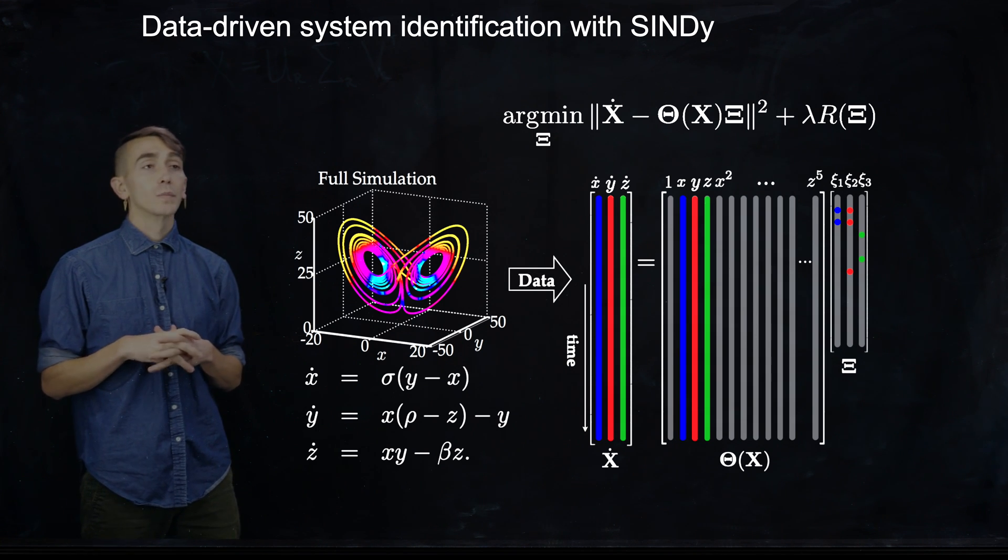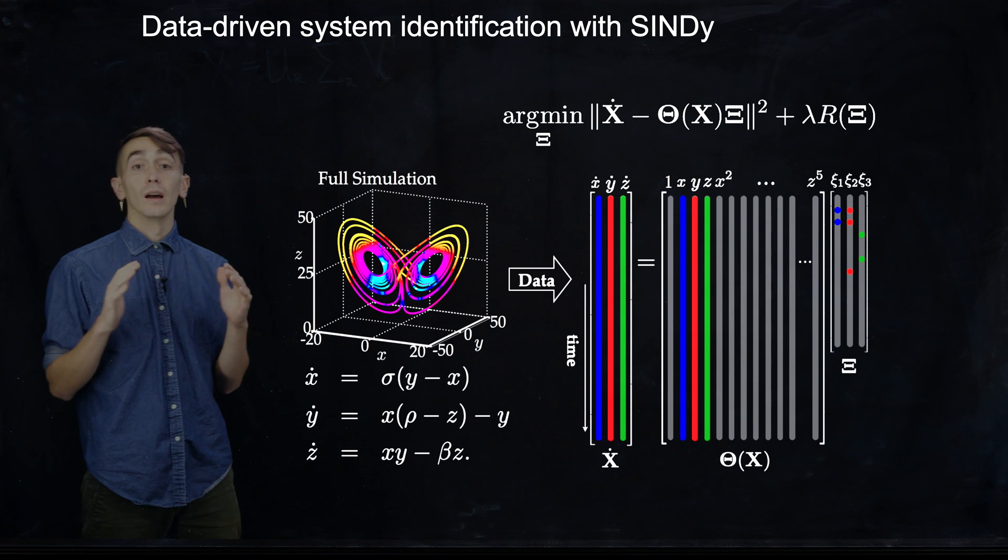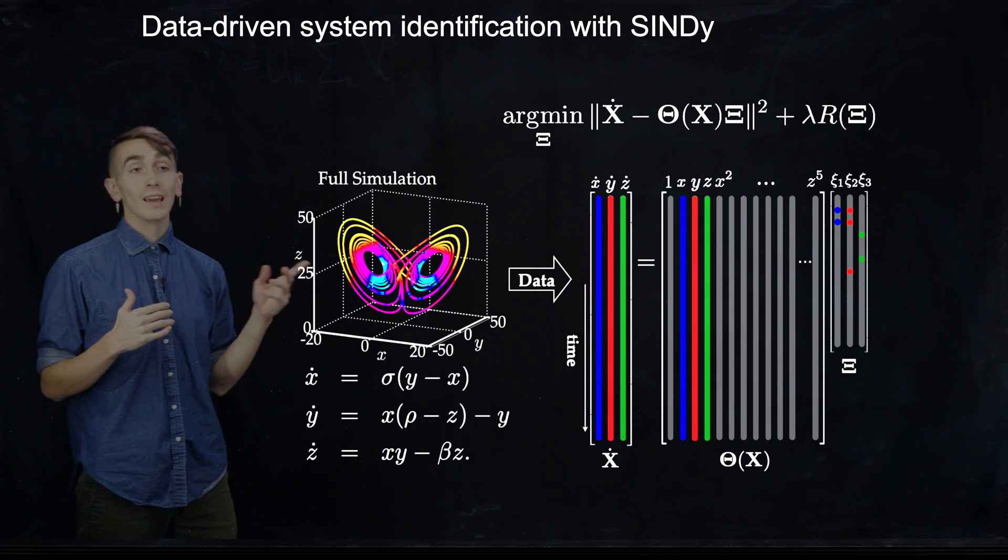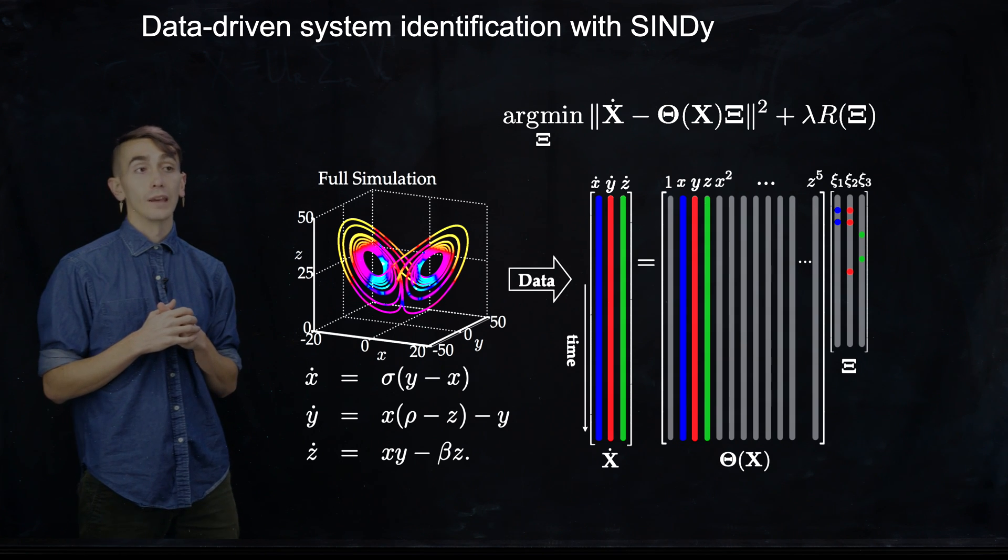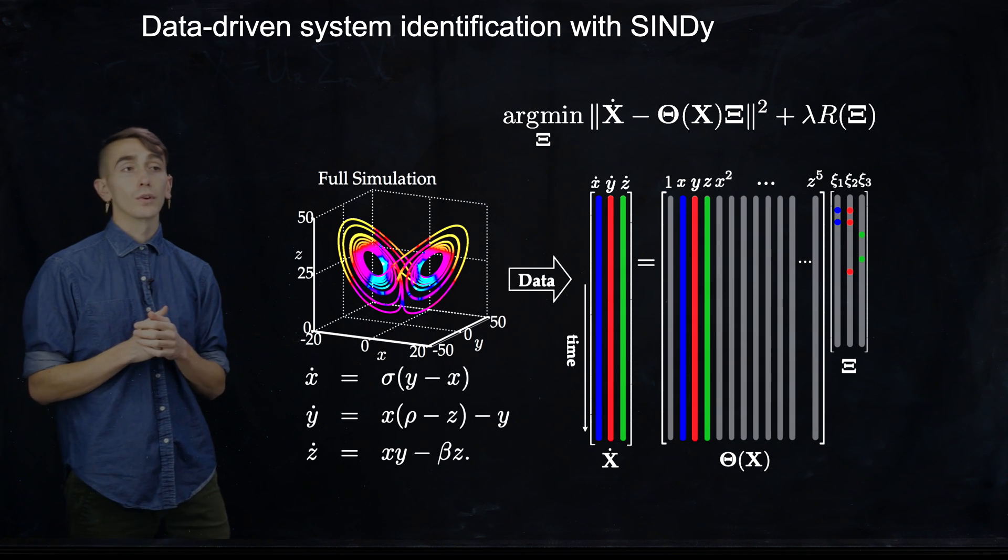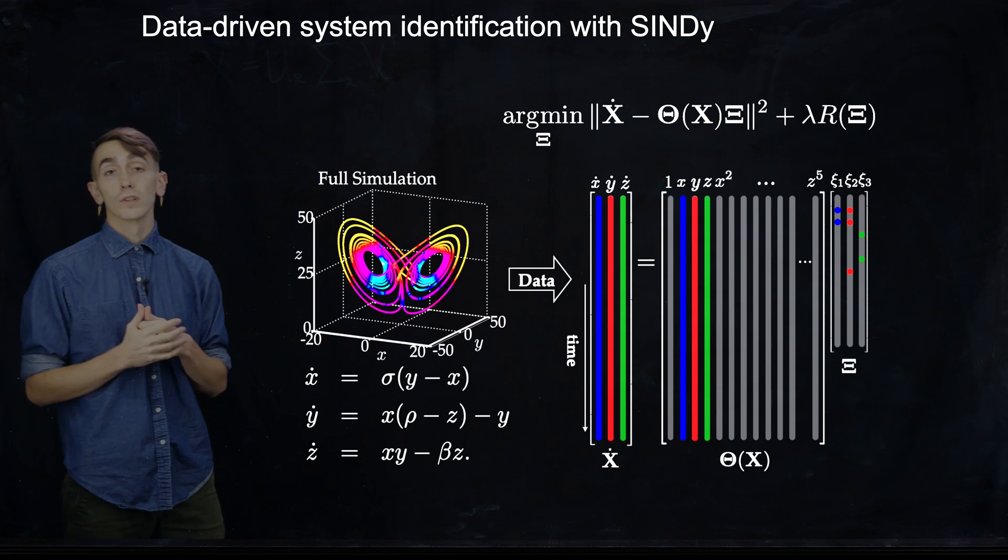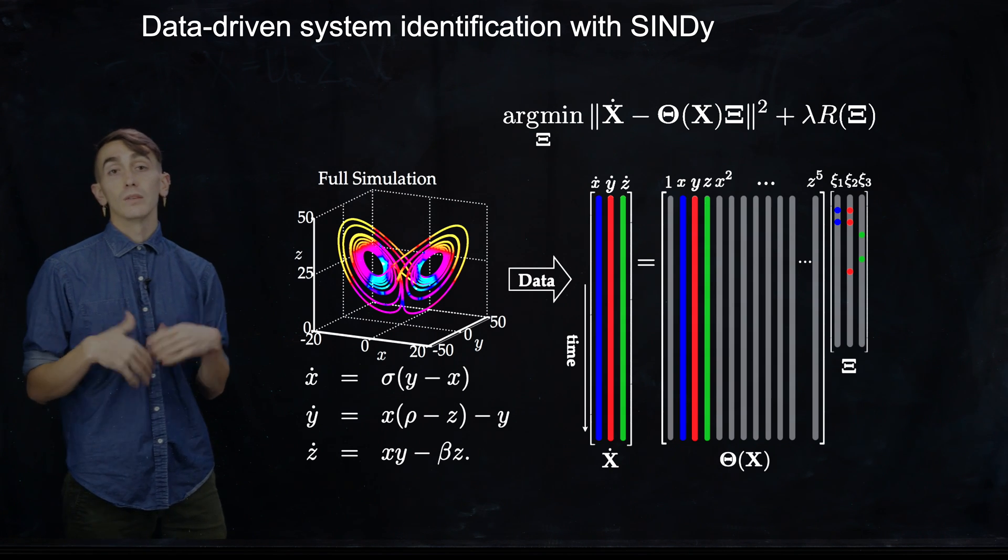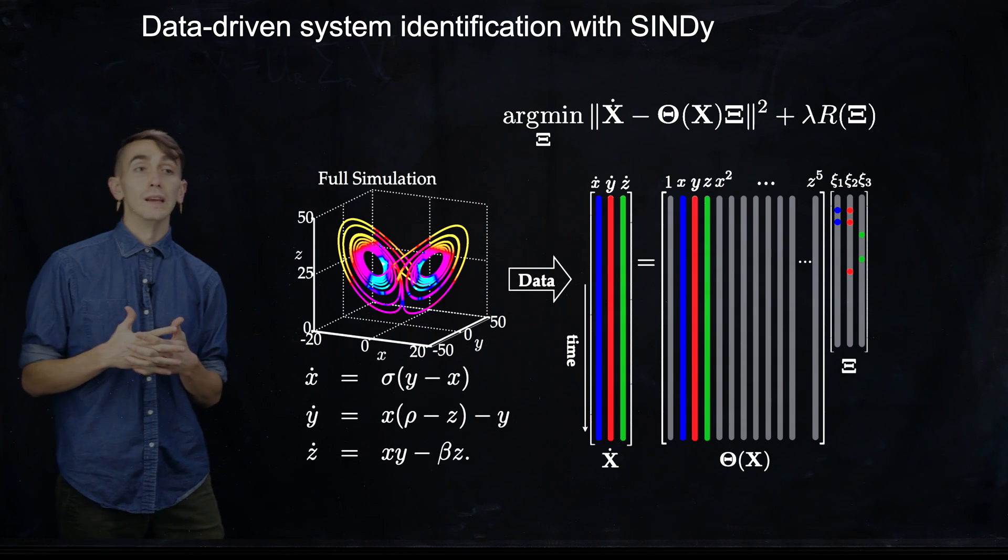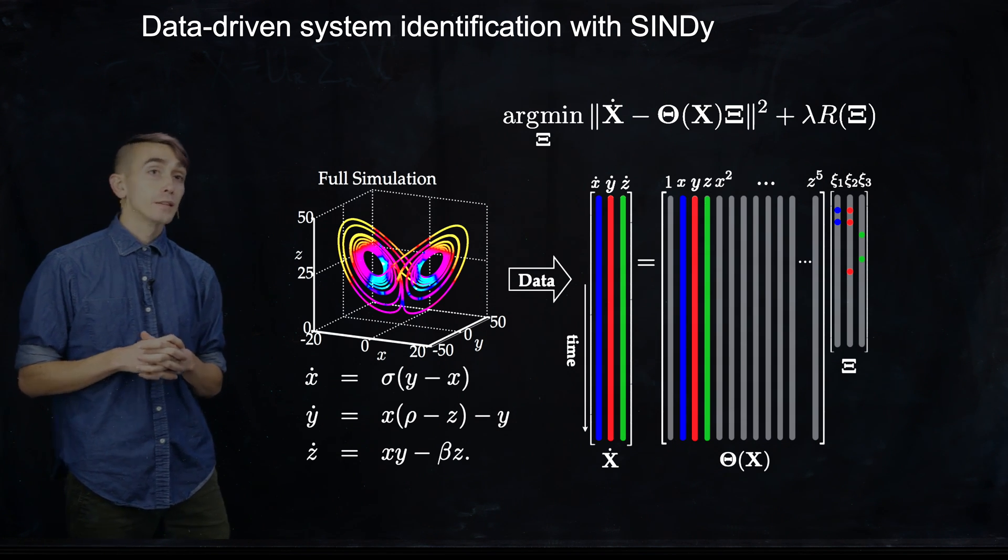And that basically is a sparsity prior that tries to zero out as many of the coefficients in that last coefficient matrix on the end there. And this is really useful. This is why it's sparse regression and not just regular regression. And basically zeroing out as many of those coefficients as possible is useful because you get parsimonious sparse models, and this tends to avoid overfitting to noisy data.